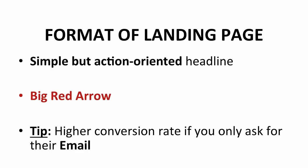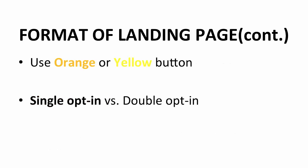A squeeze page should be simple but action-oriented. Pre-sell to give a teaser to the readers after the headline, with the big red arrow to lead the readers to the opt-in form. It has been tested that if you only ask for their email instead of name and email, results come in at a higher conversion rate. A small reminder for the opt-in form: use an orange or yellow button. It's proven to create higher conversion rates as well. Don't use other colors. Also to increase the conversion rate, use single opt-in instead of double opt-in. This is what I've learned from my experience throughout the years.